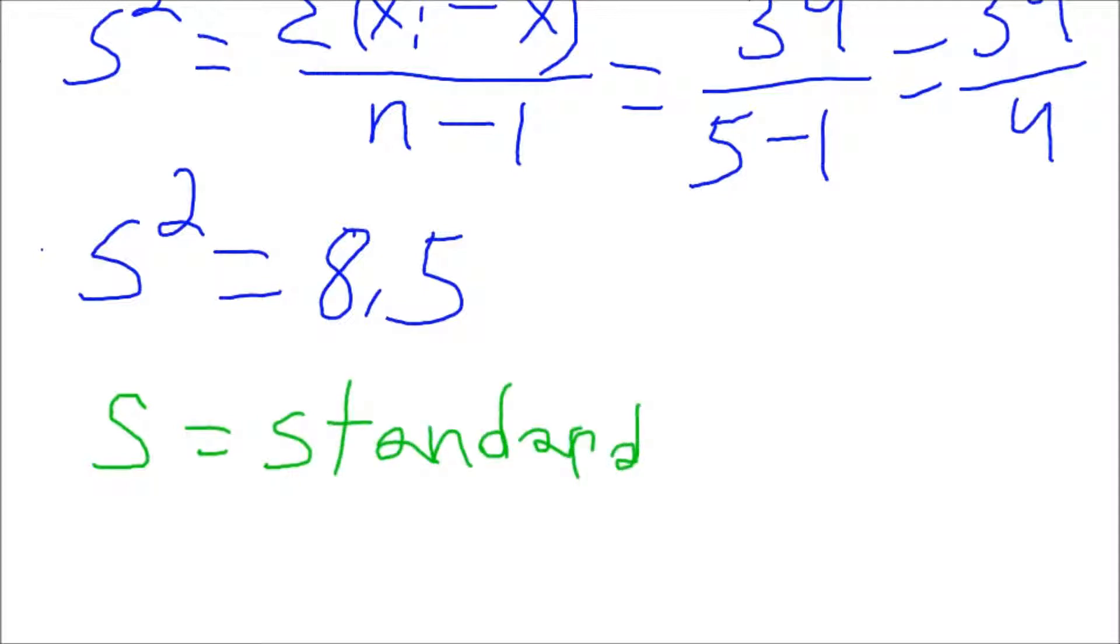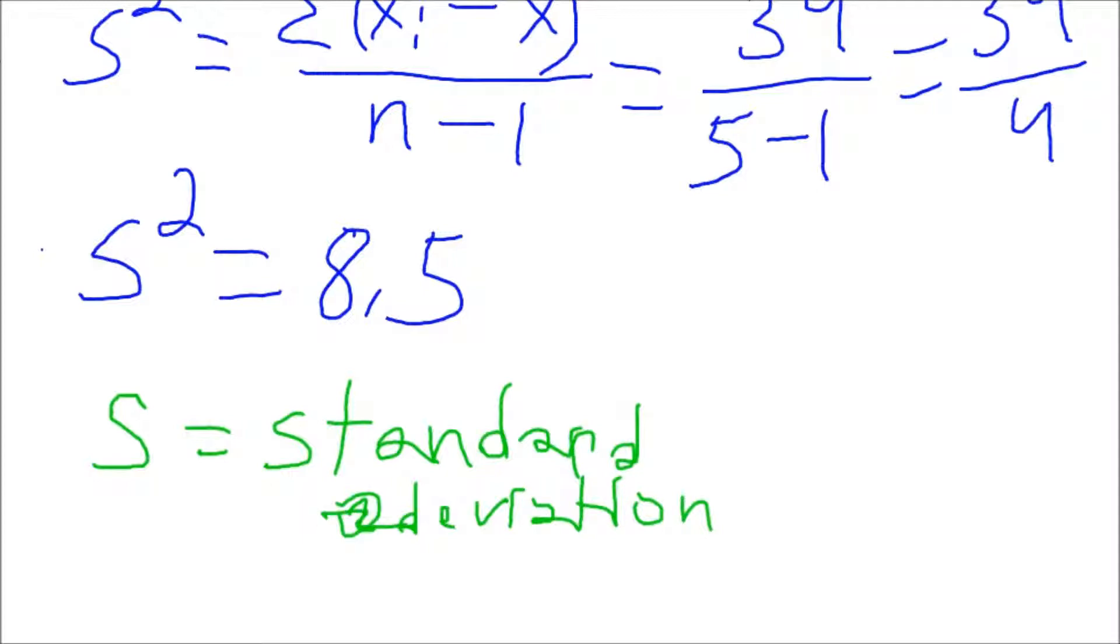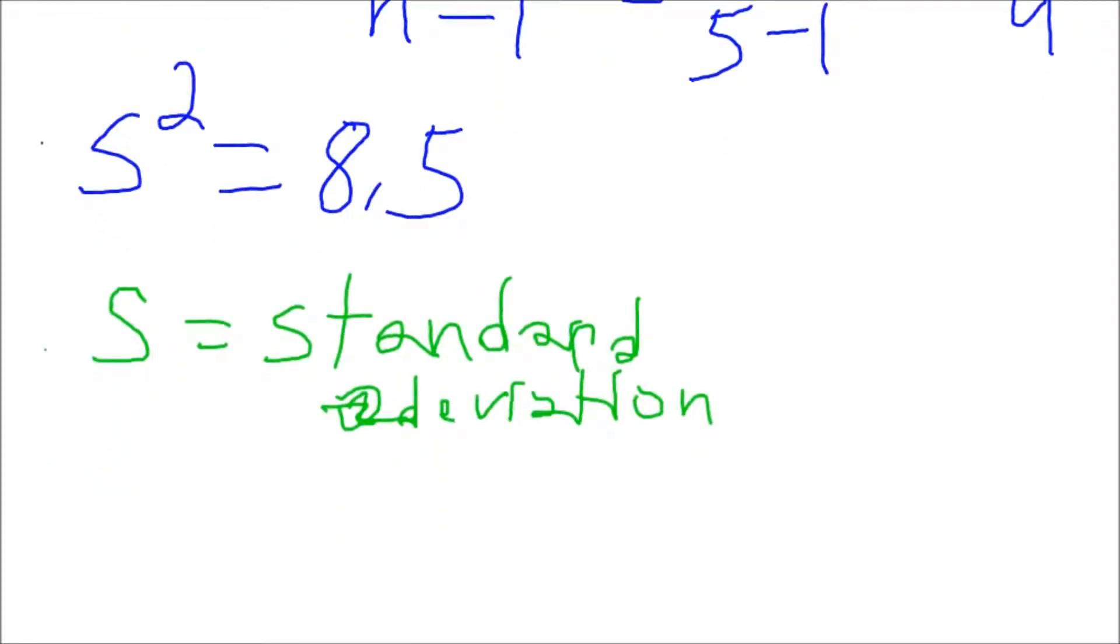And we can figure that out here. So, if we take the square root of this term right here, we can get our s term isolated. And that we get for the square root of 8.5.